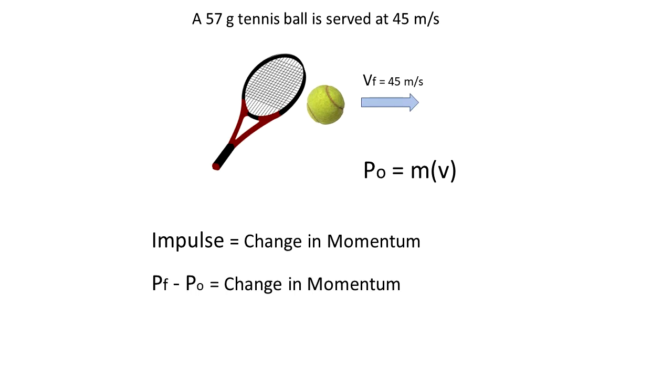So impulse is momentum final minus momentum initial. We see from the equation that the impulse is mass times velocity final minus mass times velocity initial.